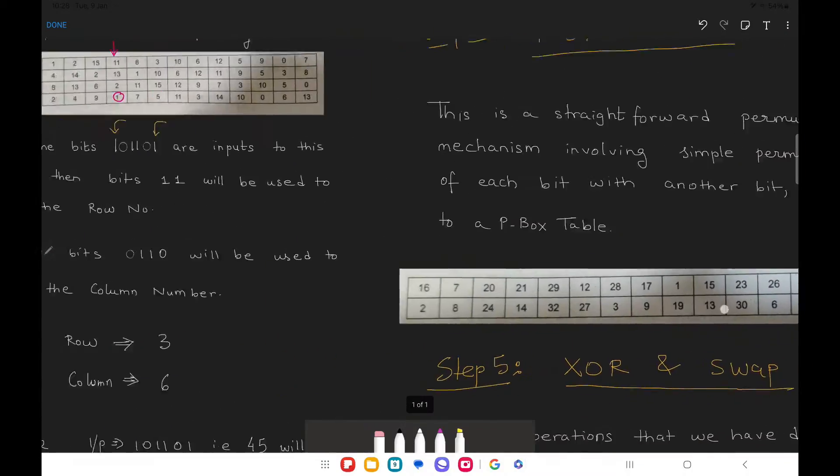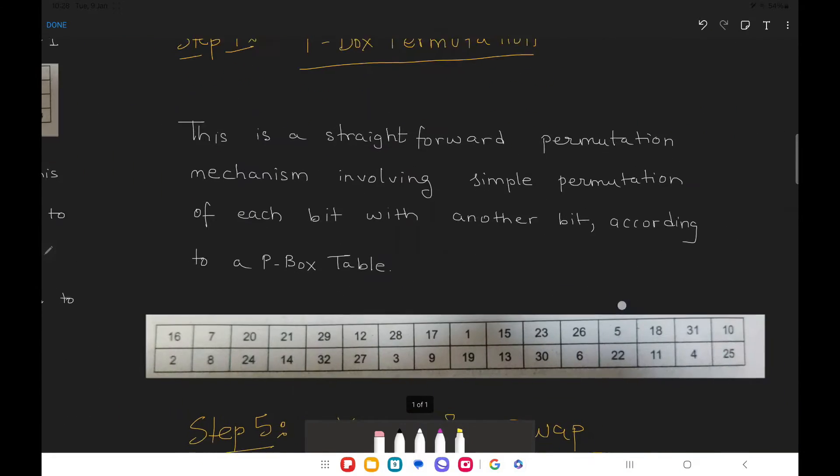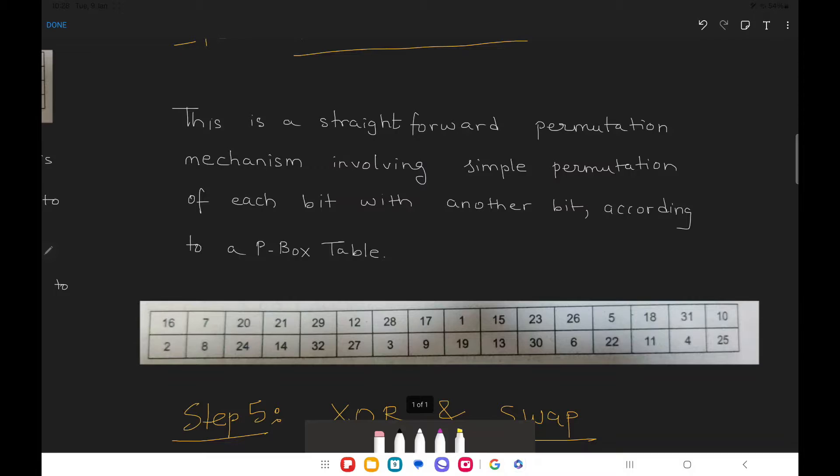As you can see over here, this is nothing but the P-Box permutation in front of you. This is a table. This is a straightforward permutation mechanism involving simple permutation of each bit with another bit. Now this table is nothing but two rows and 16 columns.